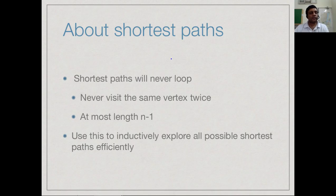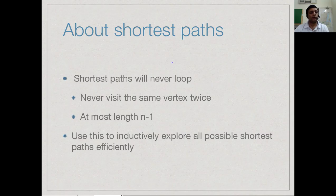We made the following observation: a shortest path, even in the presence of negative weights, will never loop because we can always remove the loop without increasing the length of the path. Therefore a shortest path never visits the same vertex twice and has length at most n-1. We exploited this in Bellman-Ford and we will now use it for an inductive algorithm for all-pairs shortest paths.